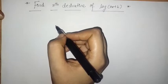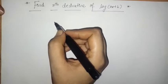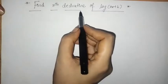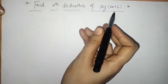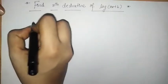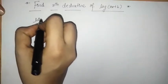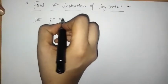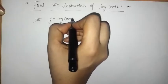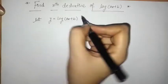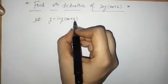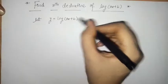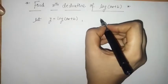Hello everyone, welcome to Unlock Maths. Today we have to find the nth derivative of log of ax plus b. Let's write here: y is equal to log of ax plus b, where a and b are constants, and here we have to find the nth derivative.